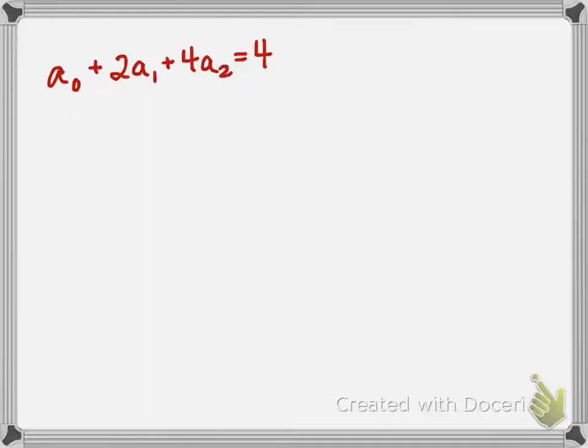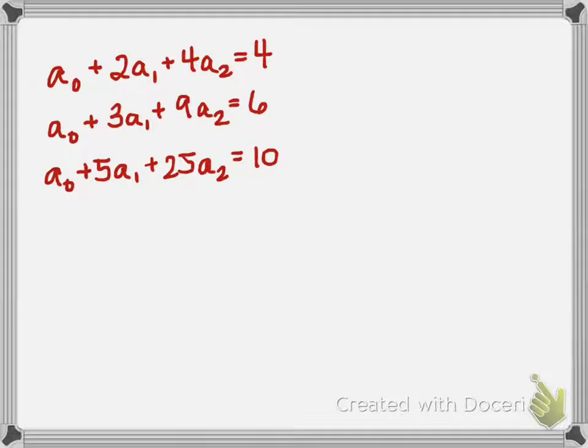Likewise, we're going to do the same when x equals 3, we get a0 + 3a1 + 9a2 = 6. That's because this polynomial needs to go through the point (3,6). And lastly, we need the polynomial to go through the point (5,10), and so we get this linear equation. Now I have a system of three equations and three unknowns.